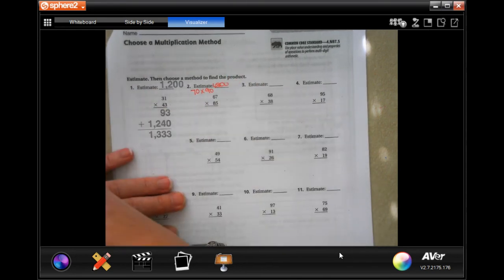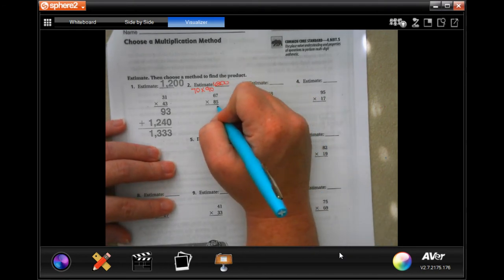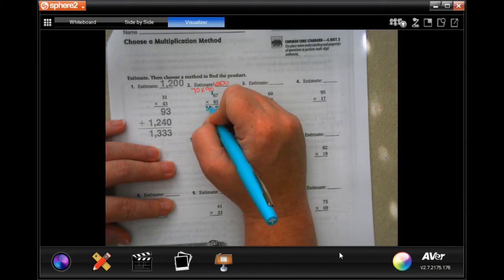So now we need to do the actual math. We're going to tic-tac-toe our way through this. Five times seven is 35. Carry our three. Five times six is 30, plus three is 33.